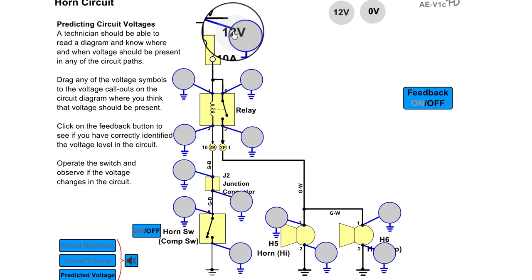students can predict where they would measure 0 or 12 volts available voltage, as indicated by the meter icons.